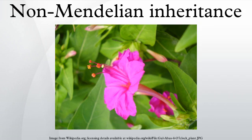Non-Mendelian inheritance is a general term that refers to any pattern of inheritance in which traits do not segregate in accordance with Mendel's laws. These laws describe the inheritance of traits linked to single genes on chromosomes in the nucleus. In Mendelian inheritance, each parent contributes one of two possible alleles for a trait. If the genotypes of both parents in a genetic cross are known, Mendel's laws can be used to determine the distribution of phenotypes expected for the population of offspring. There are several situations in which the proportions of phenotypes observed in the progeny do not match the predicted values.